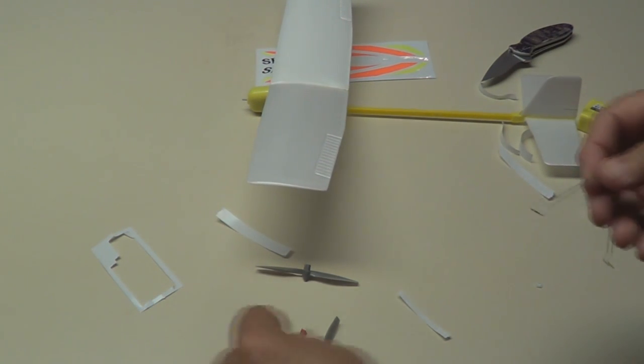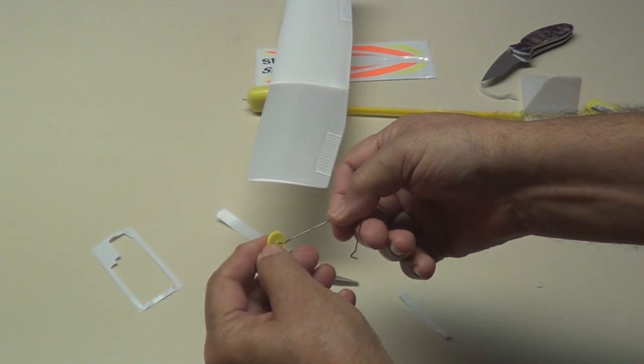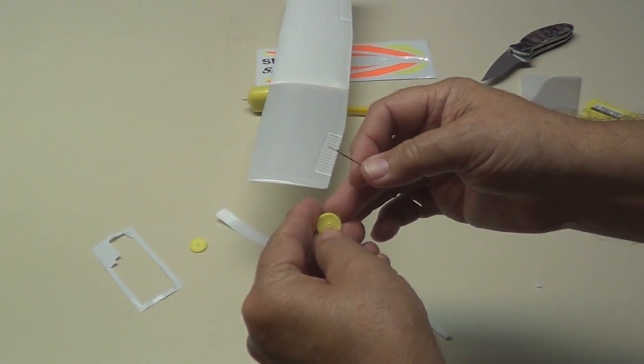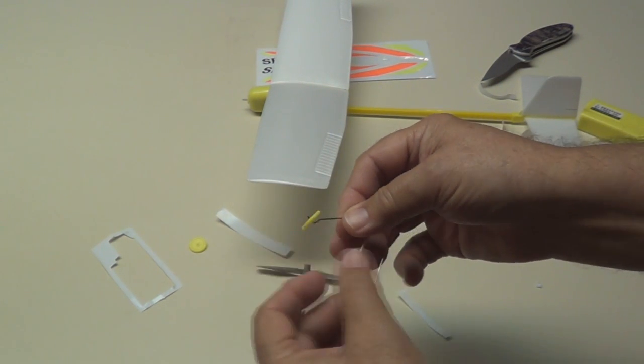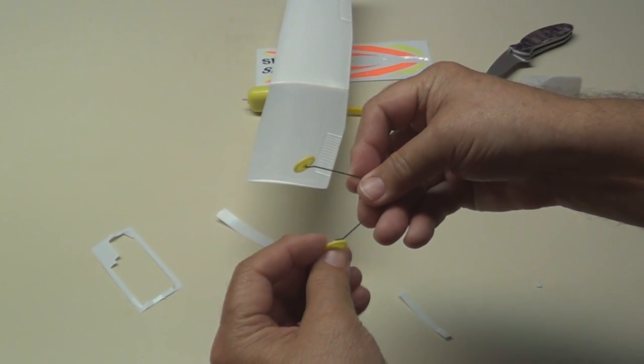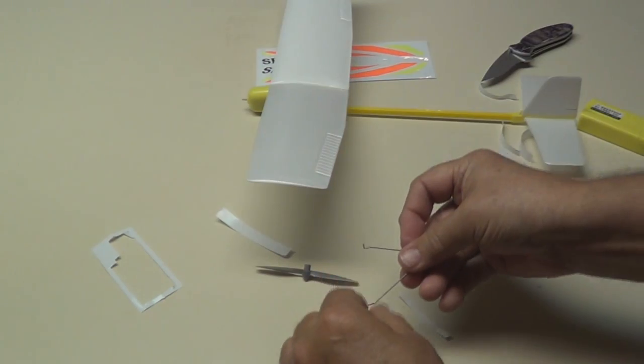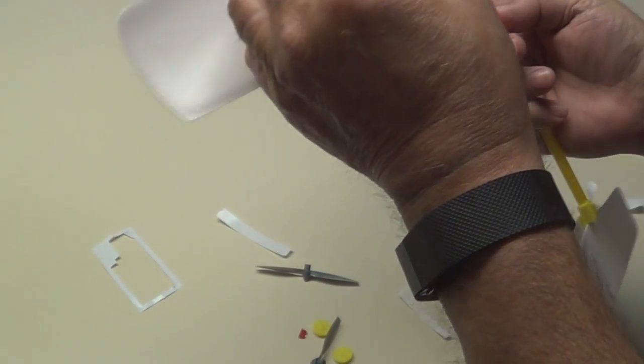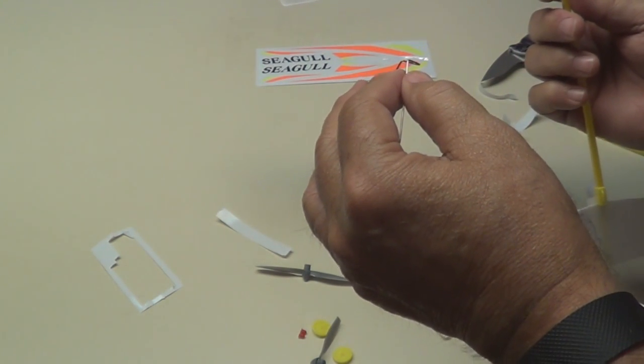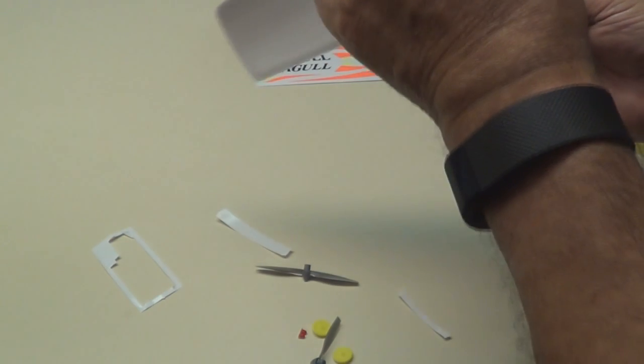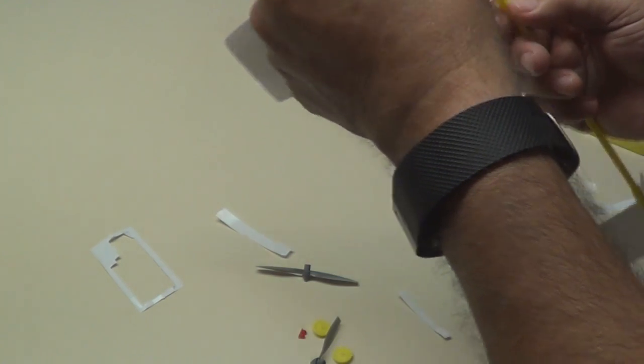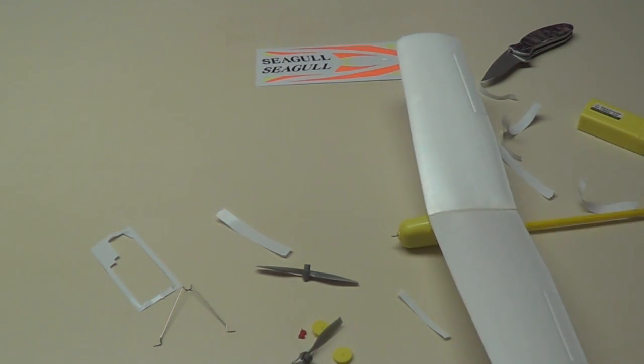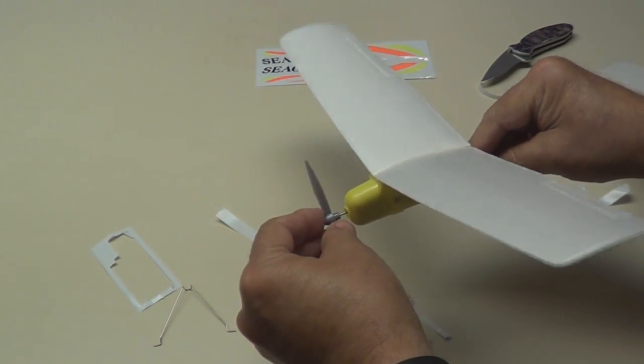Now we'll put the landing gear on. Wheels go here. Stay on real good. There's one side, there's the other side. Now if you're looking at the directions for the landing gear, there's nothing. So we're trying to figure out how to attach it to the bottom of the fuselage. I'm looking at maybe double-sided tape. It's just a guess at this point.